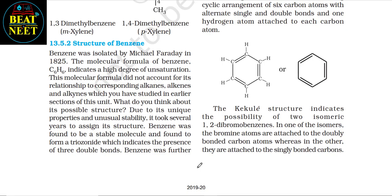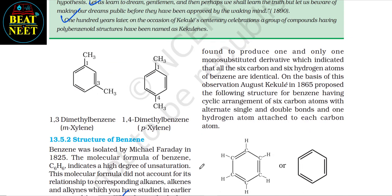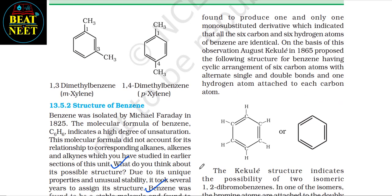The molecular formula of benzene is C₆H₆, indicating a high degree of unsaturation. This molecular formula did not account for its relationship to corresponding alkanes, alkenes, and alkynes. Due to its unique properties and unusual stability, it took several years to assign its structure. Benzene was found to be a stable molecule and found to form a triozonide, indicating the presence of three double bonds. Benzene was further found to produce one and only one monosubstituted derivative, indicating that all six carbon and hydrogen atoms are identical.